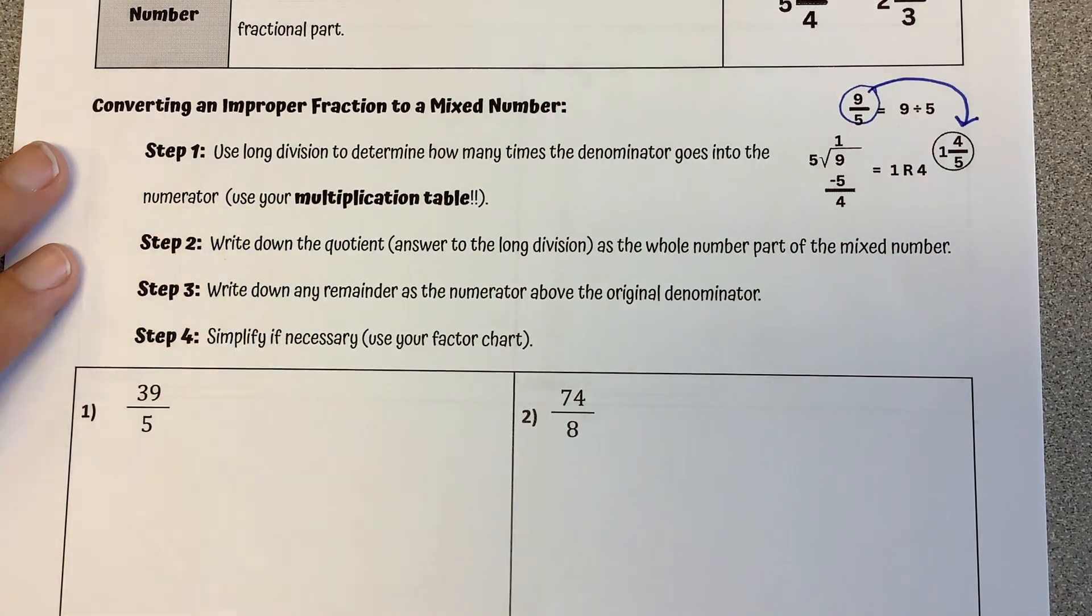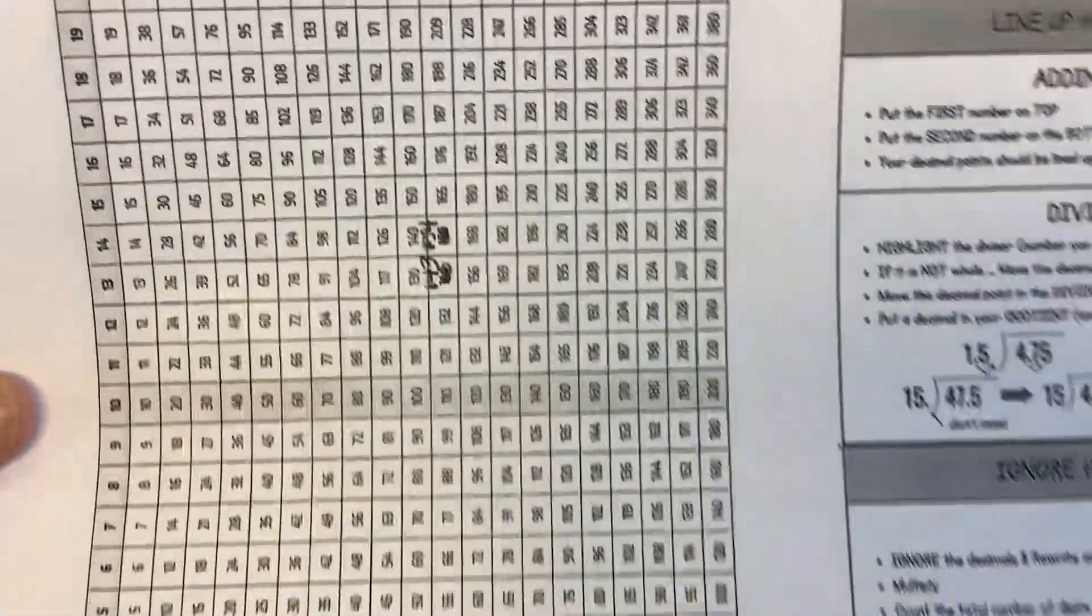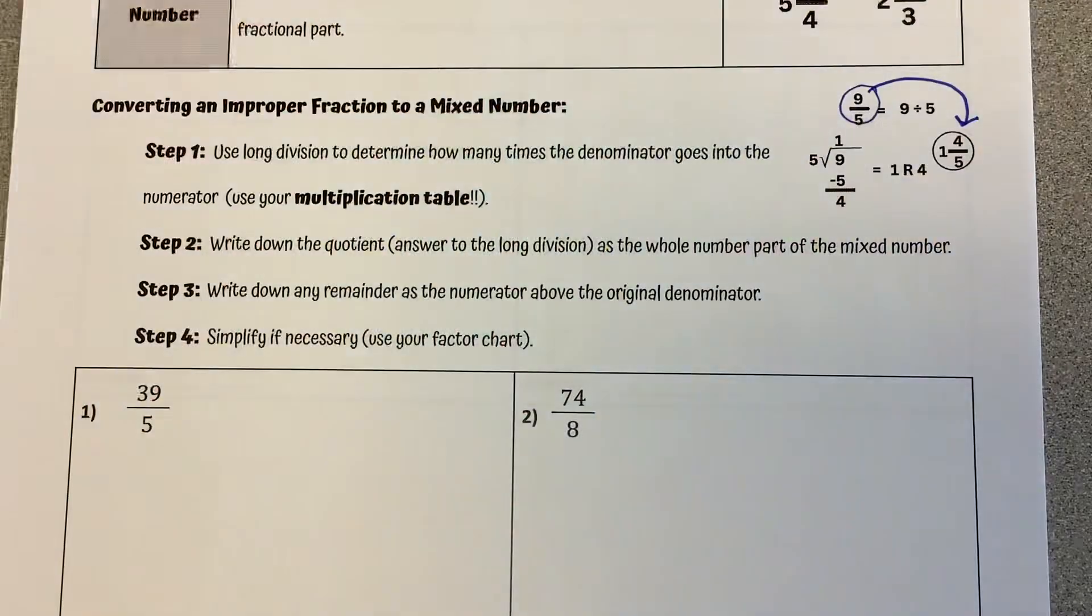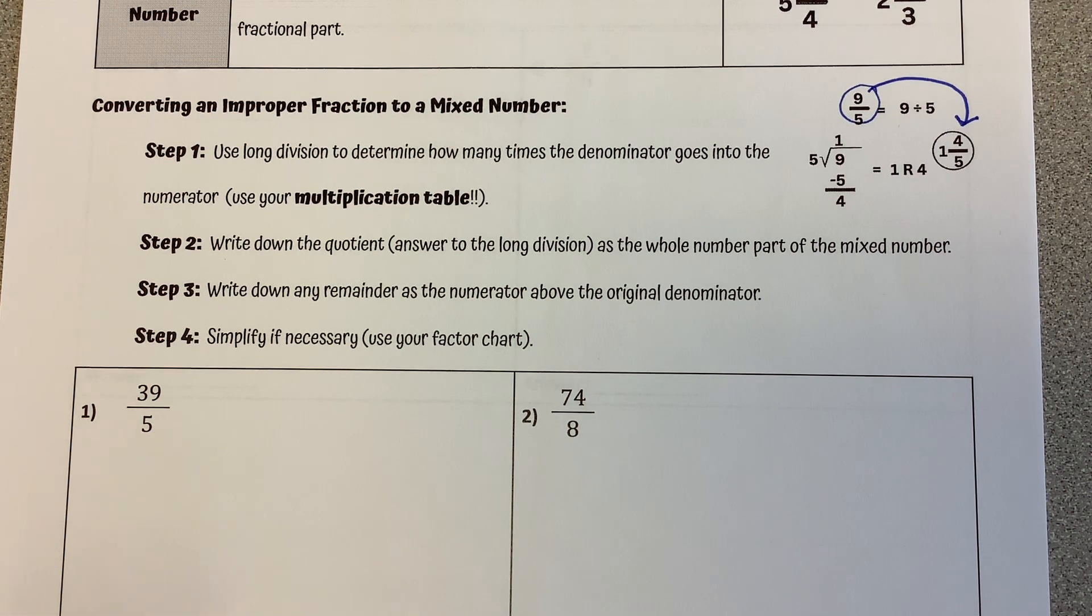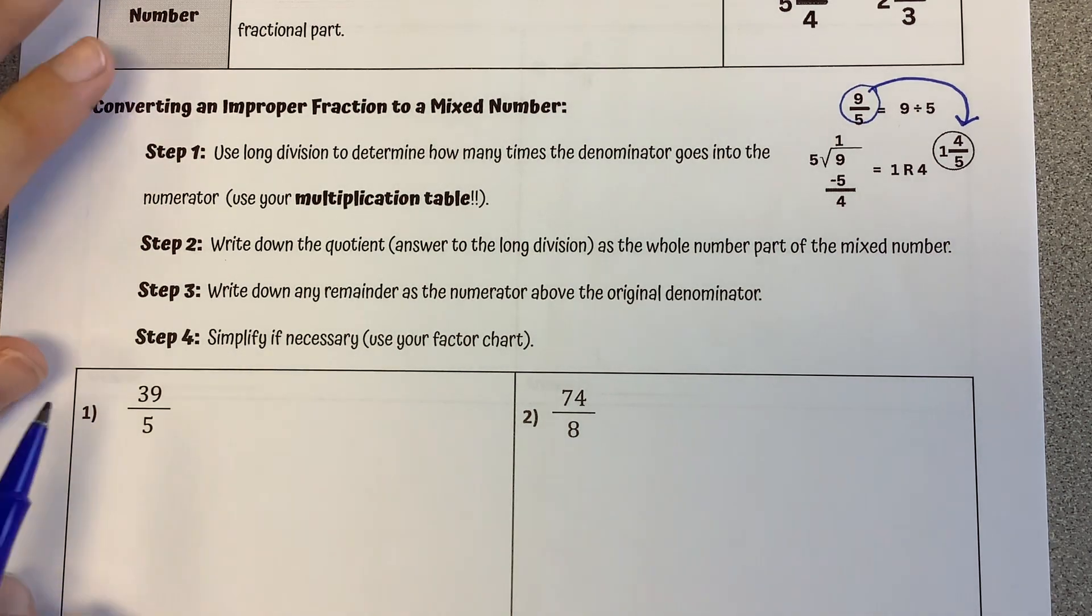So we're going to use long division. In order to use long division, I am going to have my resource packet out with my multiplication chart. We're going to write down the quotient, that answer from the long division problem, as the whole number part of the mixed number, and any remainder as the numerator above the original denominator.